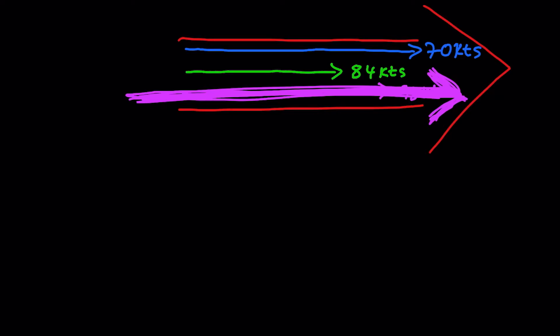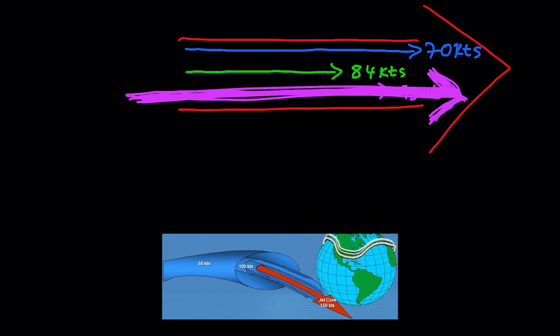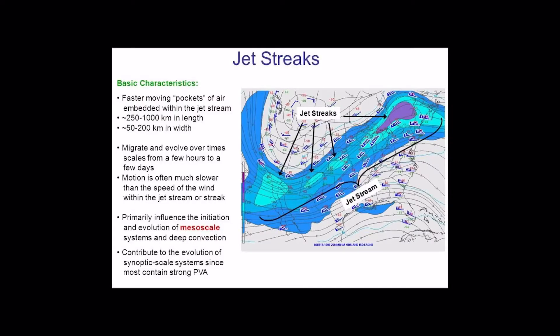The area along the jet stream axis with the greatest wind speed is known as the core of the jet stream — it is the area around the axis. The wind speed along the axis may not always be uniform; we can also have more than one maxima along an axis. The centers of high speed winds along the axis of a jet stream are known as jet streaks.